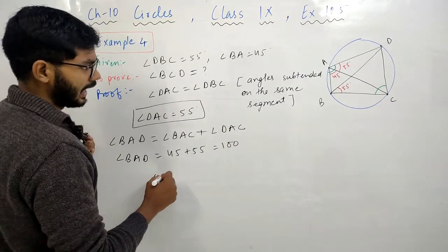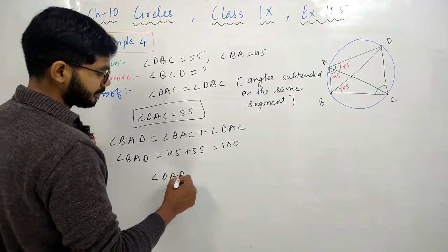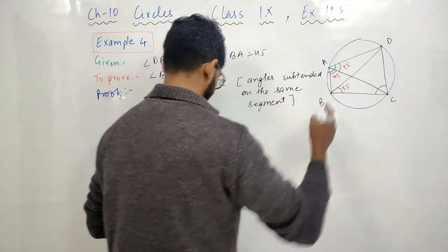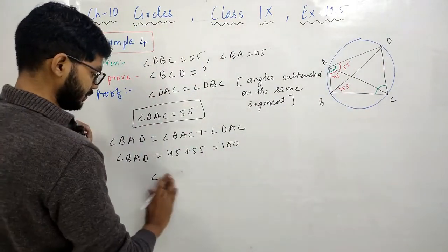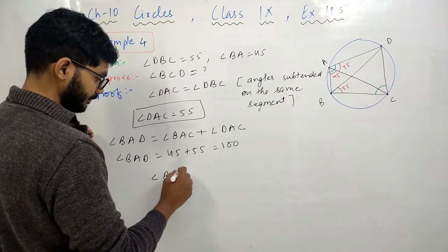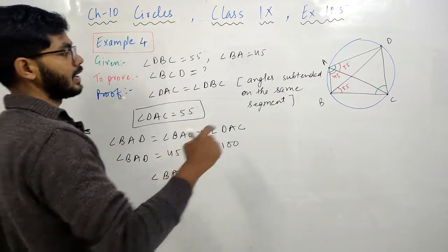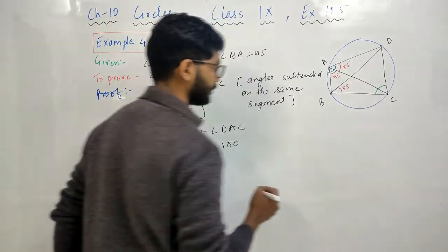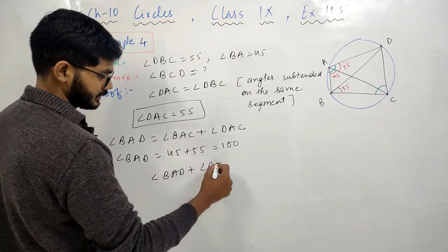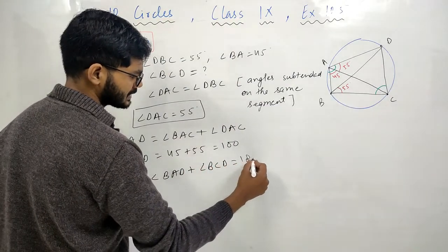अब देखे, इधर angle DAB - DAB अभी हमने निकाल ले या फिर BAD कुछ भी लिख लो - plus angle BCD. इन दोनों angles का sum कितना होगा? 180.